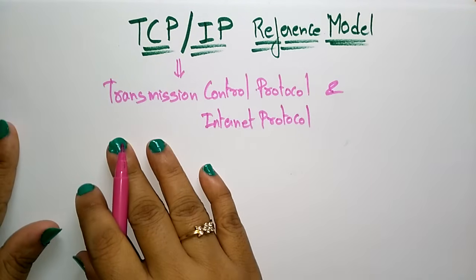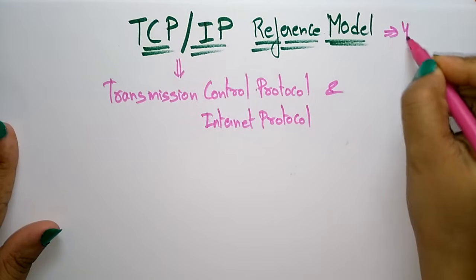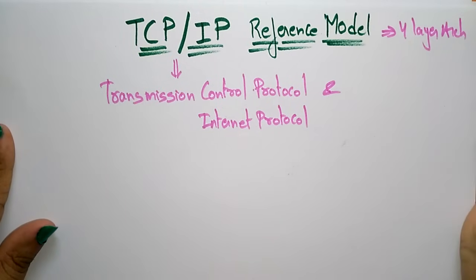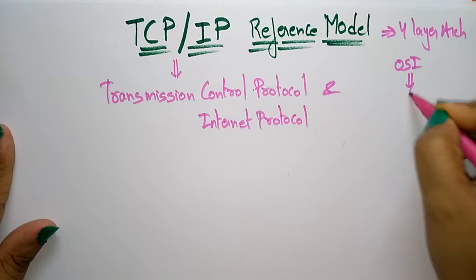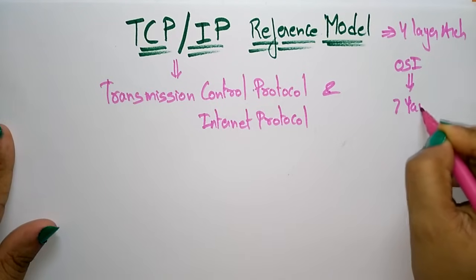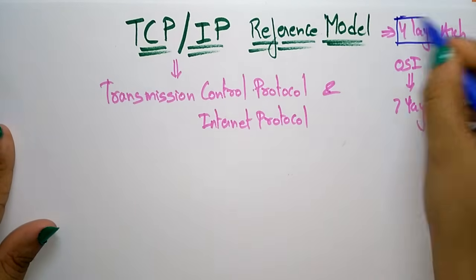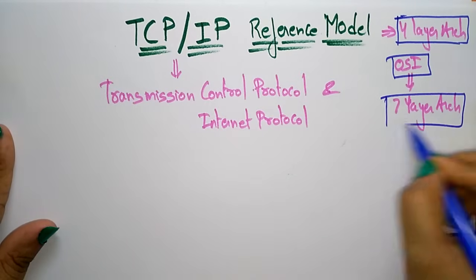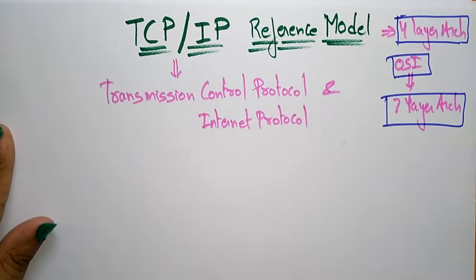This TCP/IP reference model is a four-layer architecture, whereas the OSI reference model is a seven-layer architecture. You have to remember that: TCP/IP is a four-layer architecture whereas OSI reference model is a seven-layer architecture.